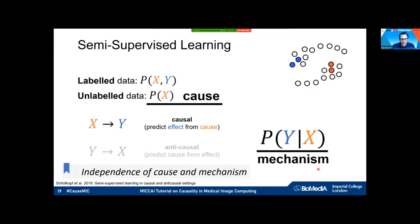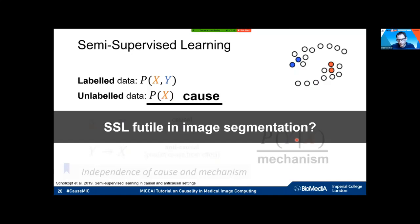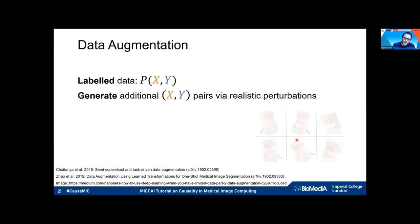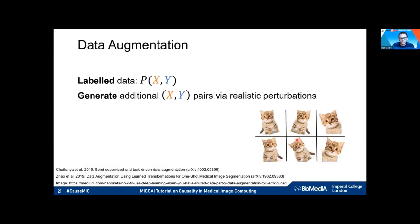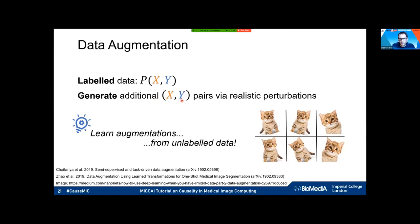From a theoretical standpoint, p(x) being independent of the conditional distribution means unlabeled images are uninformative for the segmentation mechanism. This could imply semi-supervised learning shouldn't work for image segmentation — yet we do see papers at MICCAI showing it works. Causality also helps explain why data augmentation works: it synthetically generates new (x, y) pairs with realistic perturbations, adding to the joint distribution, which is less dependent on the causal direction.